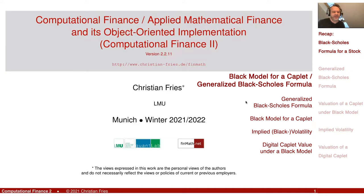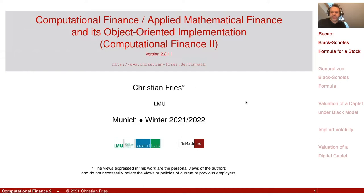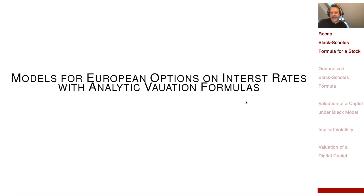Welcome back to Applied Mathematical Finance, Computational Finance. We are in a section on interest rate products. We did the linear products — the ones which we could value without a model. Then we introduced some non-linear products, where we have non-linearities, say for example a maximum function, like a call option in the payoff. Today I would like to discuss models to value these simple European options. We will basically do the Black-Scholes model, the Bachelier model — the classic stuff, but now for interest rates.